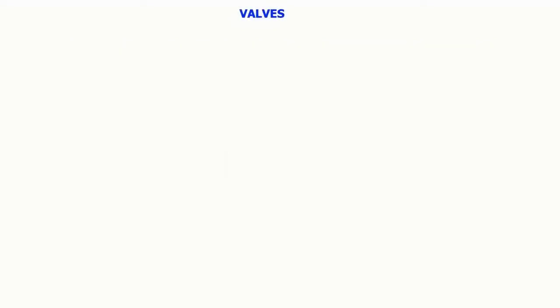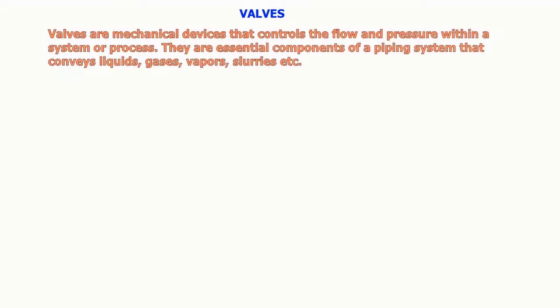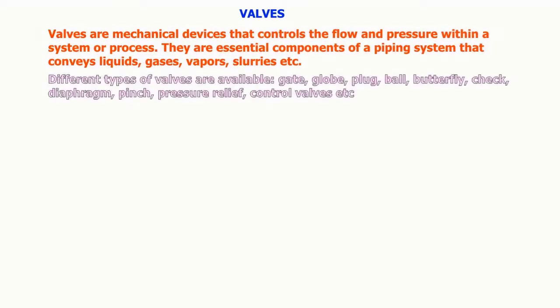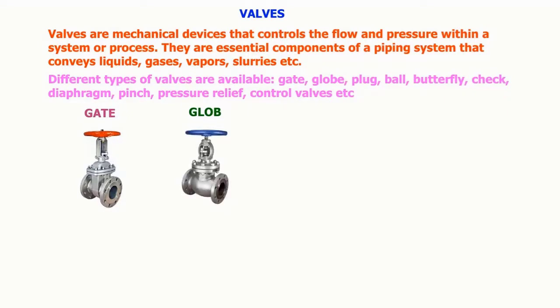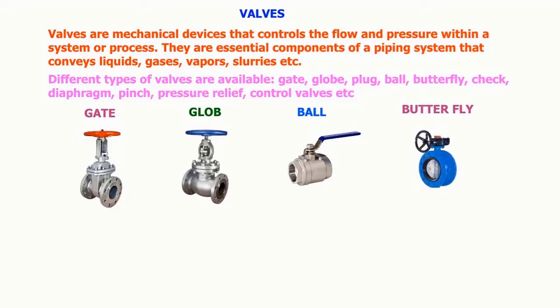Valves are mechanical devices that control the flow and pressure within a system or process. They are essential components of a piping system that conveys liquids, gases, vapors, slurries, etc. Different types of valves are available: gate, globe, plug, ball, butterfly, check, diaphragm, pinch, pressure relief, and control valves are the commonly used valves.